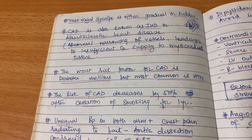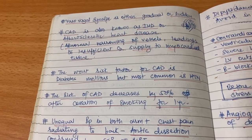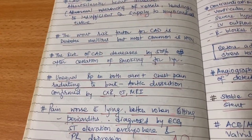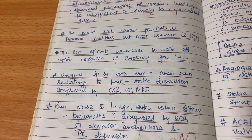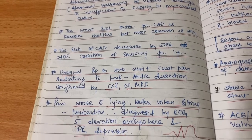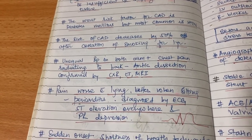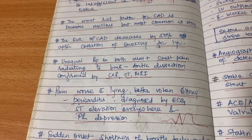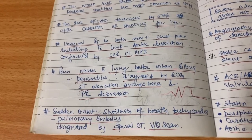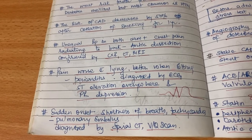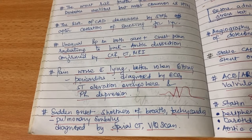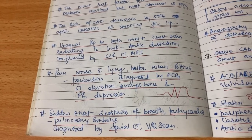Unequal BP in both arms plus chest pain radiating to the back is aortic dissection, confirmed by CXR, CT, or MRI. Pain worse with lying and better when sitting is pericarditis, diagnosed by ECG — ST elevation everywhere and PR depression are the ECG findings. Sudden onset shortness of breath with tachycardia is pulmonary embolus, diagnosed by spiral CT and V/Q scan.